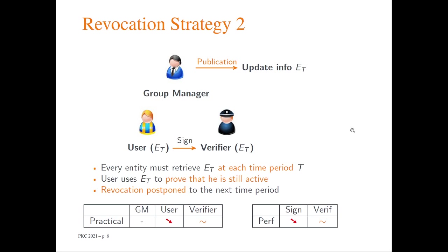The second revocation strategy is one where the group manager publishes so-called update information at the beginning of each time period. Using this update information, the user can prove that they are a group member and are still active in that time period. The problem is that the user must retrieve this information at the beginning of each time period, which is obviously a problem if credentials are embedded in a non-connected device. Moreover, the signature process becomes more complex since the user must also prove they have not been revoked.